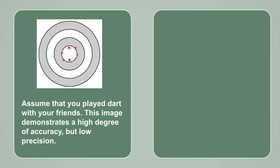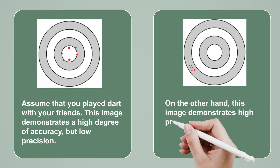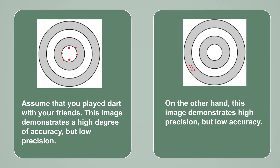Assume that you played darts with your friends. This image demonstrates a high degree of accuracy but low precision. On the other hand, this image demonstrates high precision but low accuracy.